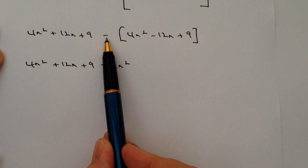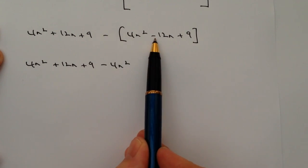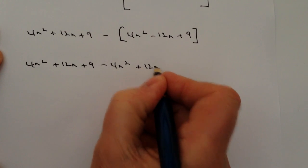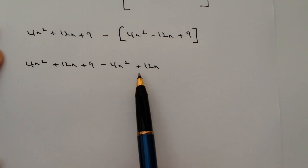And then the next one has got minus a minus. So that's going to be a plus. So it's going to become plus 12n. And just be really careful. That's the bit that's going to make the difference to you on this question.